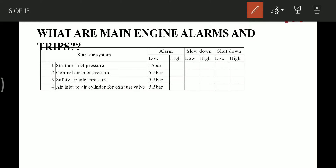The starting air system alarms: start air inlet pressure — low pressure alarm below 15 bar. Control air inlet pressure — low alarm below 5.5 bar. Safety air inlet pressure — set value 5.5 bar. Air inlet to air cylinder for exhaust valve — also 5.5 bar. Below 5.5 bar gives alarm in all three conditions.